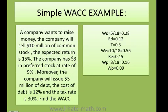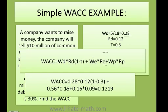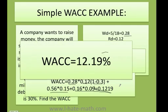I do exactly the same — I calculate the weights. The weight of debt is 5 over 18, which gives 0.28. The cost of debt stays the same at 12%. The weight of equity is 10 over 18, and the weight of preferred stock is 3 over 18. Plugging into the formula: weight of debt times cost of debt times (1 − T), plus weight of equity times return on equity, plus the preferred stock piece. The result is 0.1219, or a WACC of 12.19%.